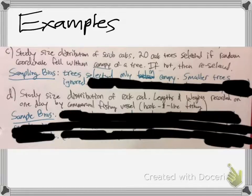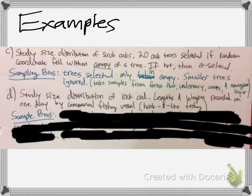So I guess a solution to this would be to take samples from the forest floor, the understory, the canopy, and the emergent layer. Make sure you're diversifying your tree data for height for the population. They're probably measuring height. That would make sense. Anyway, so next example.